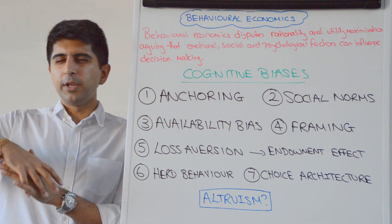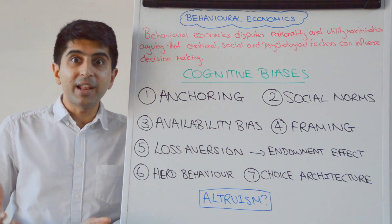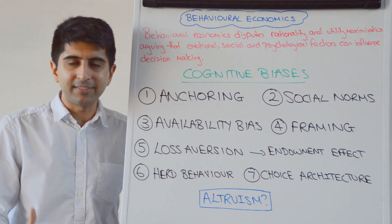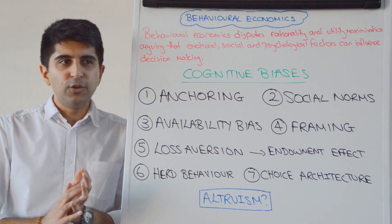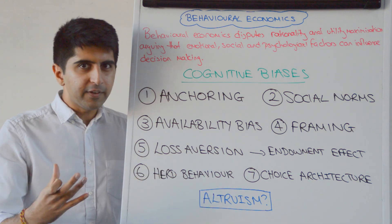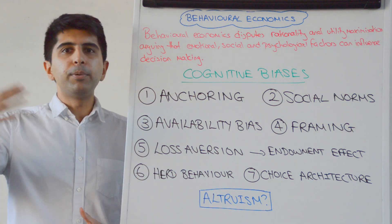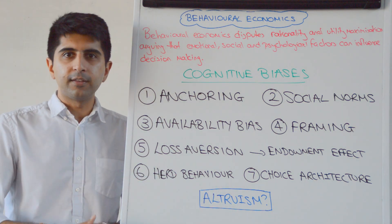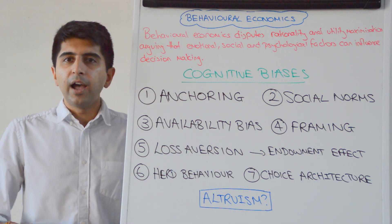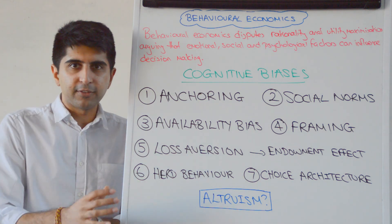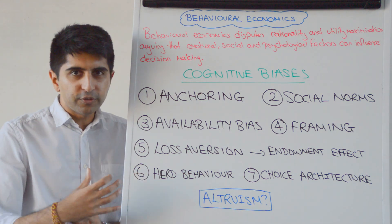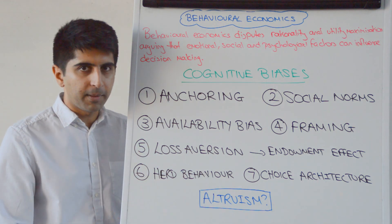Herd behavior. This is when we basically jump on the bandwagon — we make a decision because other people around us have made that same decision. For example, going to a restaurant and making your order based on what your friends are ordering. More significantly, if we look at financial markets and bull markets where lots of people are investing in a certain stock, equity, or commodity, another investor makes the same decision to buy that stock simply because everybody else is doing it. That can cause a bubble and lead to a huge crash. That's herding behavior.